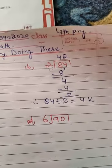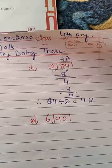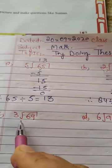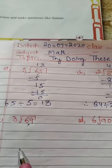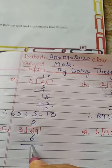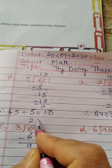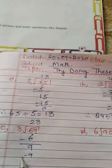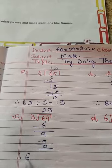For example, if there are 84 biscuits divided by 2, each gets 42 biscuits. Next: 3 divides 69. 3 ones are 3, 3 twos are 6. 6 minus 6 is 0. 9: 3 threes are 9, 9 minus 9 is 0. Therefore 69 divided by 3 equals 23.